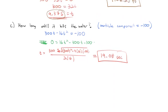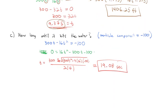Putting our answers together: after about 9.375 seconds, the cannonball reaches its maximum height; then after about 19.08 seconds, the cannonball crash-lands in the water.